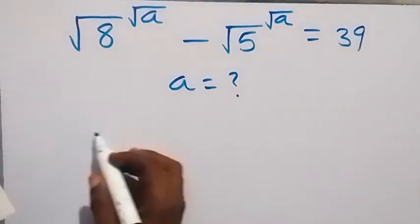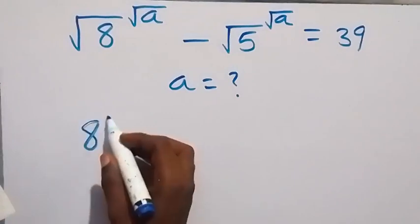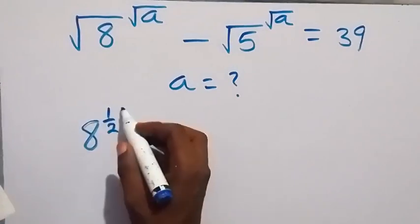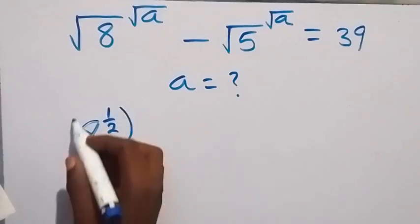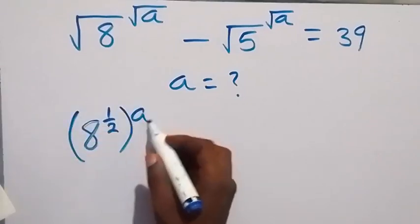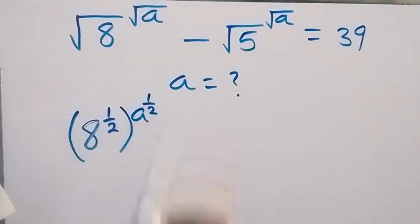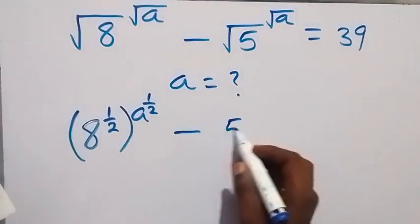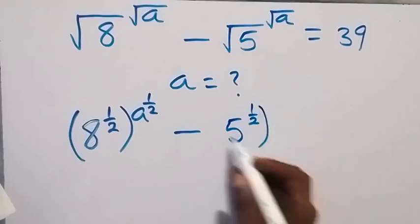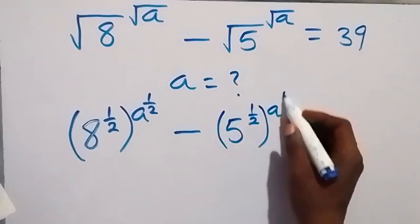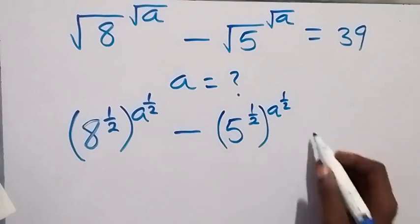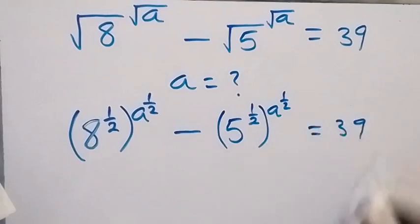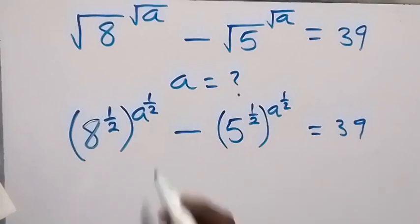We can write root 8 as 8 raised to power half, raised to power a, and that a is also raised to power half. Similarly, minus 5 raised to power half, which is also raised to power a, then raised to power half as well, equals 39. From the law of indices, we multiply these powers.